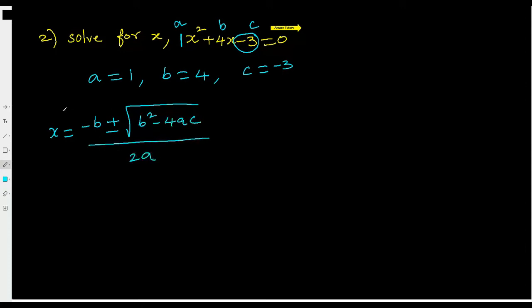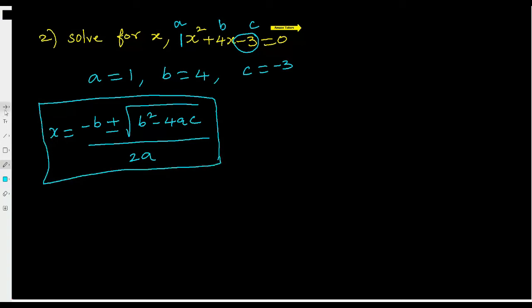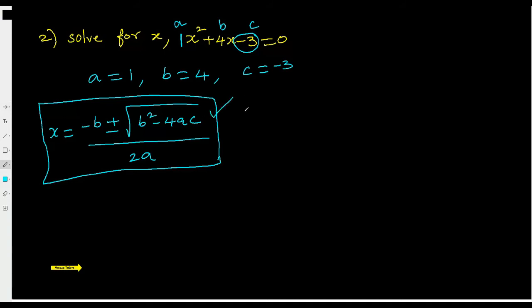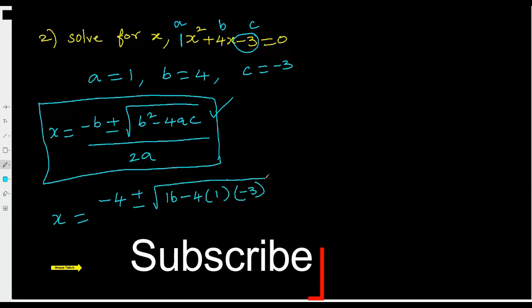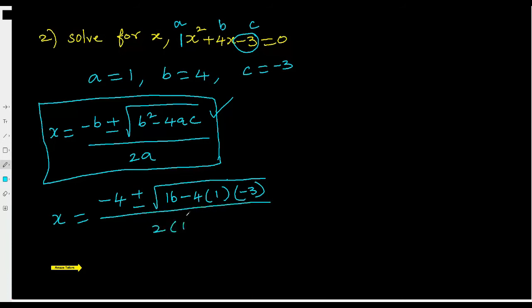It is always good to write the formula first before substituting, so you won't make mistakes. Also, even if your calculation is wrong, you'll get marks for writing the formula — two benefits. Now substitute: negative 4, plus or minus the square root of 4 squared which is 16, minus 4 times 1 times negative 3, divided by 2 times 1, which is simply 2.